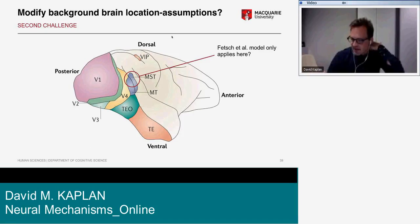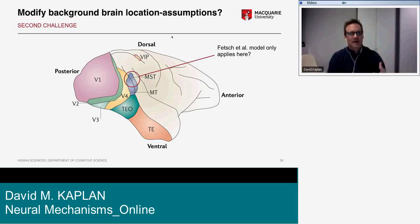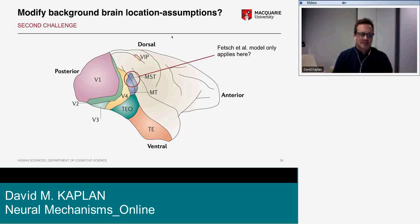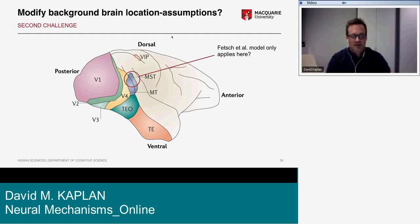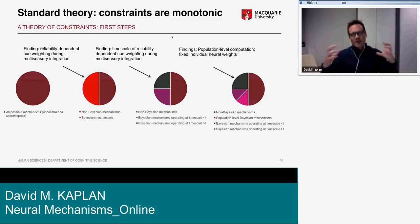The move is to highlight that there are background assumptions that can be varied so the tension is resolved. One way is to modify assumptions about the appropriate level at which these Bayesian computations are performed — saying the Fetsch model applies at the individual neuron level and the PPC model applies at the population or network level, so there's no tension. Another move is to say these models have non-overlapping scope: the Fetsch neural model really applies only to MSTd, while the PPC model applies more generally everywhere else.